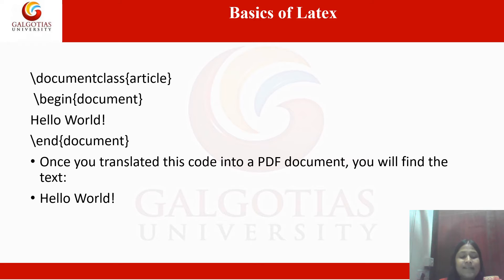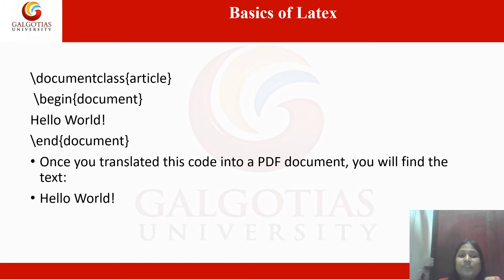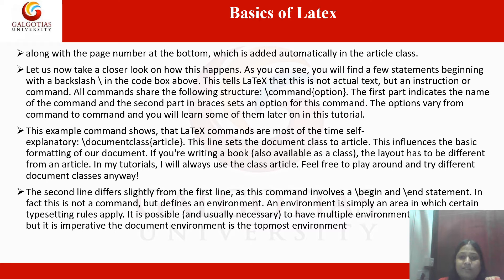A basic LaTeX code starts with \documentclass, where we define the type of document. Here we are using \documentclass{article}. Next comes \begin{document} with the content to be displayed, followed by \end{document}. Once we compile this code into a PDF document, we can find the text written between begin and end document — which is 'Hello World' — along with the page number at the bottom, which is added automatically in the article class.